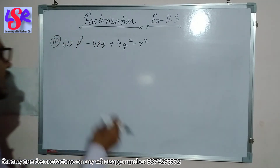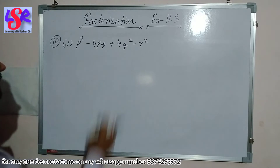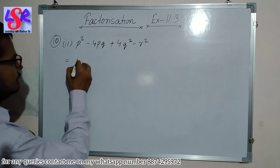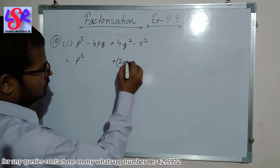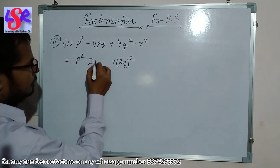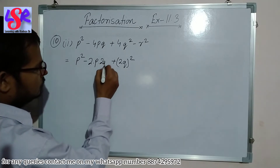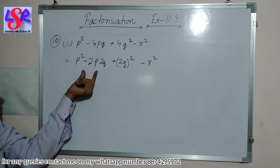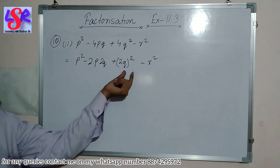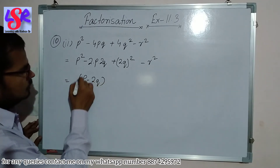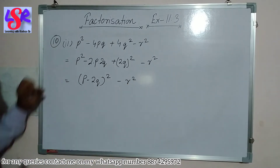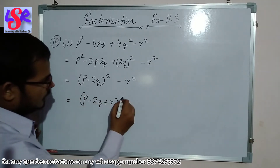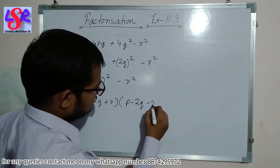Now question 10 second part: p²-4pq+4q²-r². We convert the first three terms into a perfect square: p²-2×p×2q+(2q)² = (p-2q)². So the expression becomes (p-2q)²-r². Using a²-b²=(a+b)(a-b), this gives (p-2q+r)(p-2q-r) as the answer.